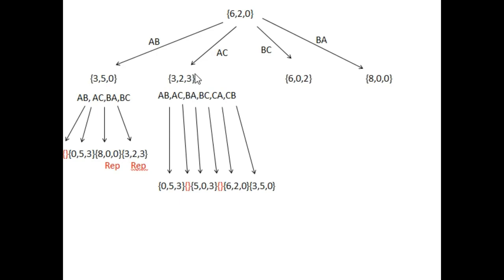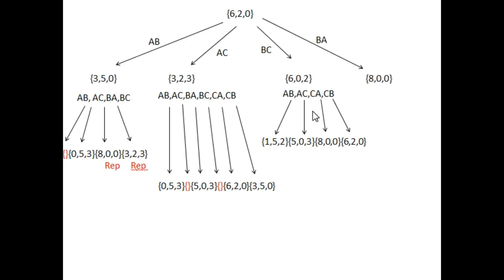We can add 3 liters of water from jug C into jug B, generating a new state. Looking at the output, there are also some repeating states — for example, 8,0,0 is a repeating state. State 3,5,0 is also a repeating state.